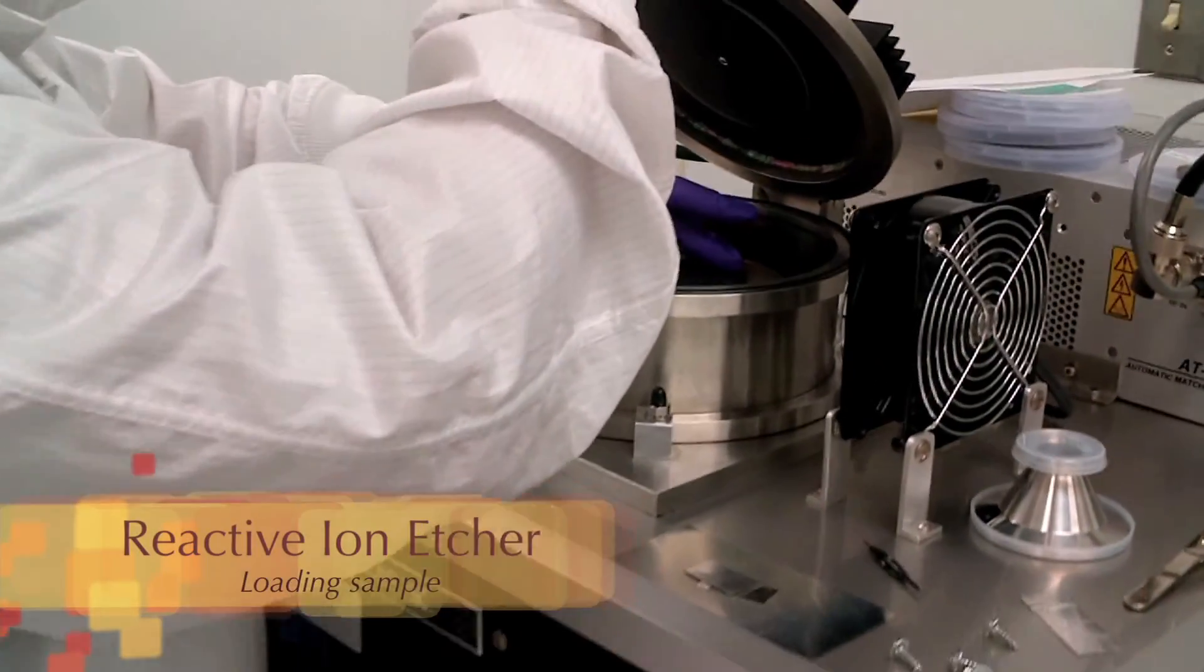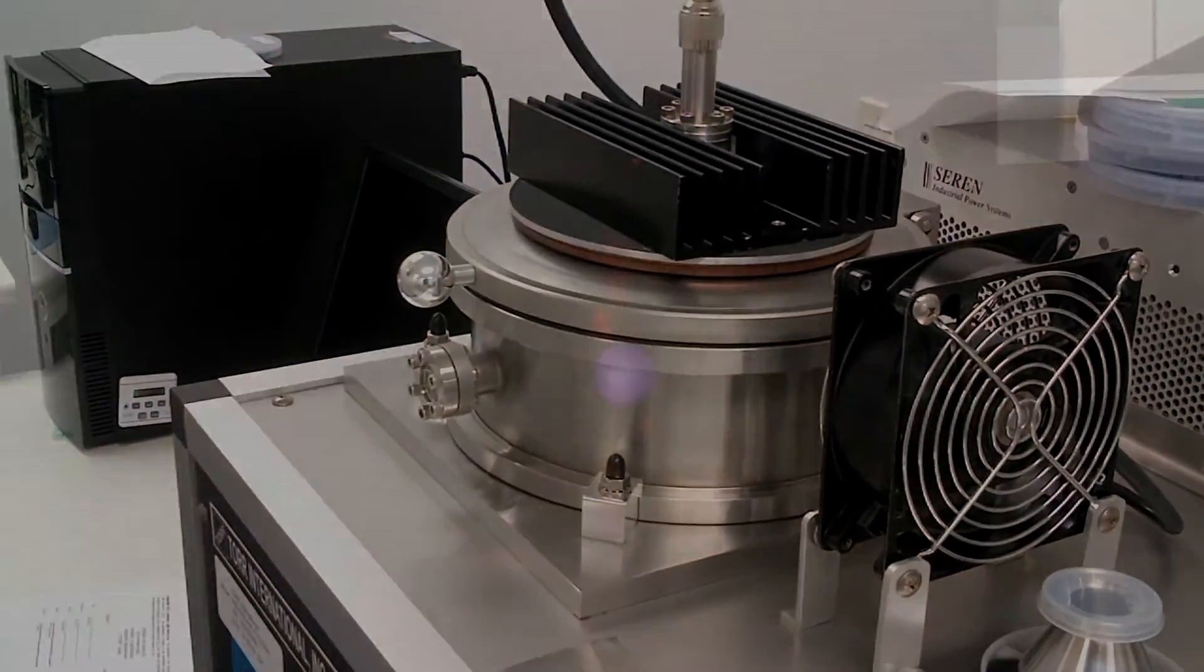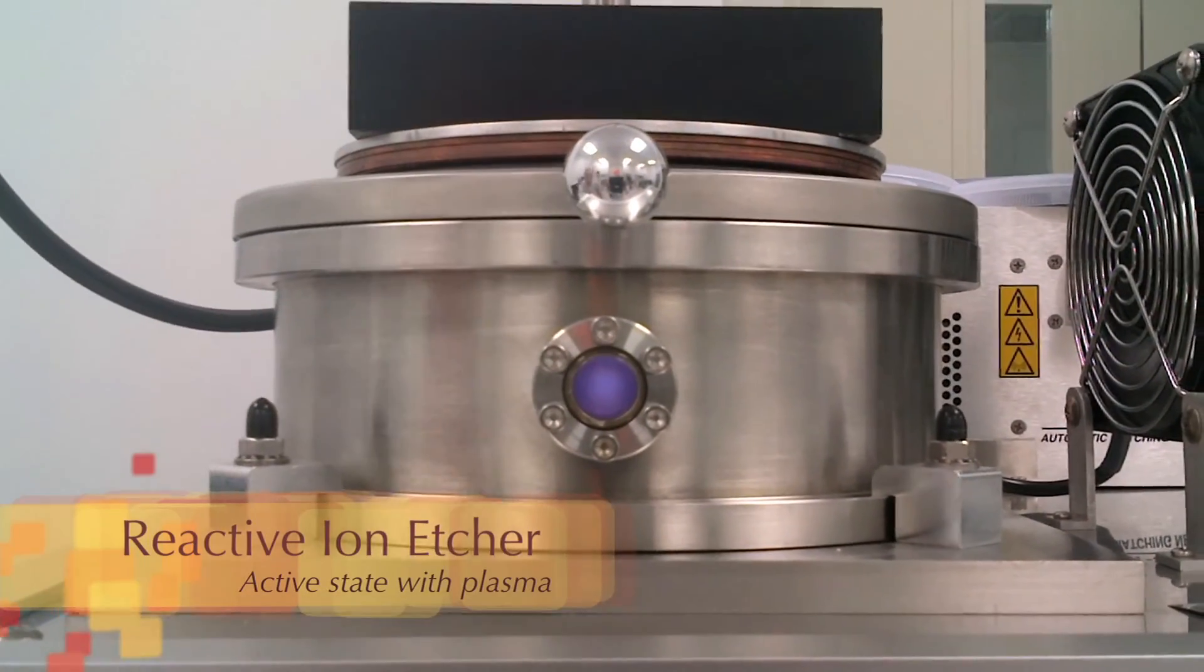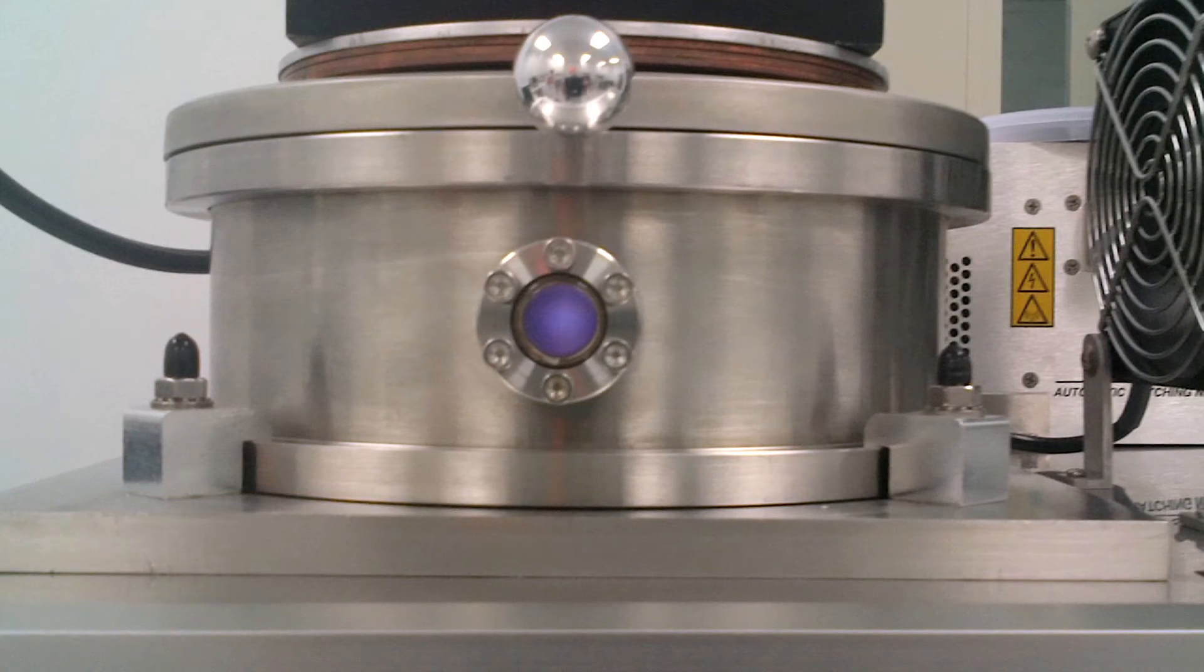For metallic devices, the sample is passed along to subsequent electroplating processes using the metal seed layer to fill the voids with metal, typically nickel or copper. Once electroplated, the remaining polymer is removed through a flood exposure process followed by development. The seed layer is then removed by bombardment with argon ions inside a reactive ion etcher.